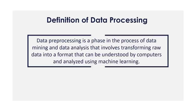Raw data, which comes from the actual world and might be in the form of text, photographs, video, and so on, is untidy. It is not only possible for it to have mistakes and inconsistencies, but it also frequently lacks a regular, consistent design. Information that is neat and organized is easier for machines to process since they read data as a series of ones and zeros. Therefore, it is not difficult to do calculations using structured data, such as whole numbers and percentages. However, prior to analysis, unstructured data such as text and photos must first be cleaned up and prepared in the appropriate manner.